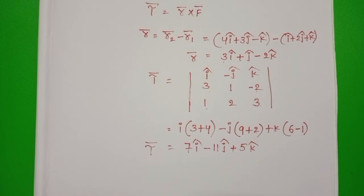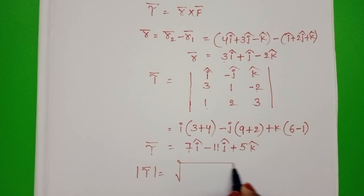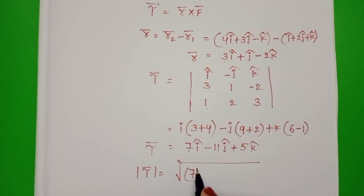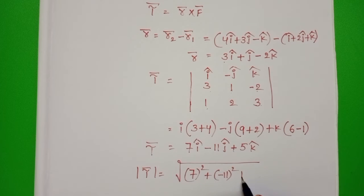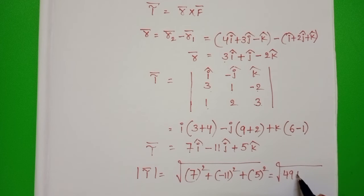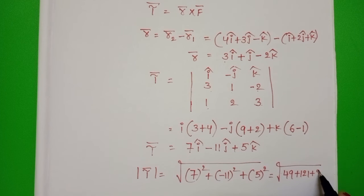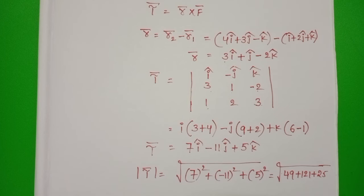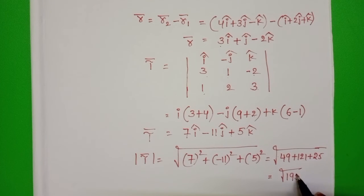But we have to find out magnitude of the torque. Magnitude of the torque equals square root of 7 whole square plus minus 11 whole square plus 5 whole square. That equals square root of 49 plus 121 plus 25. That equals square root of 195.